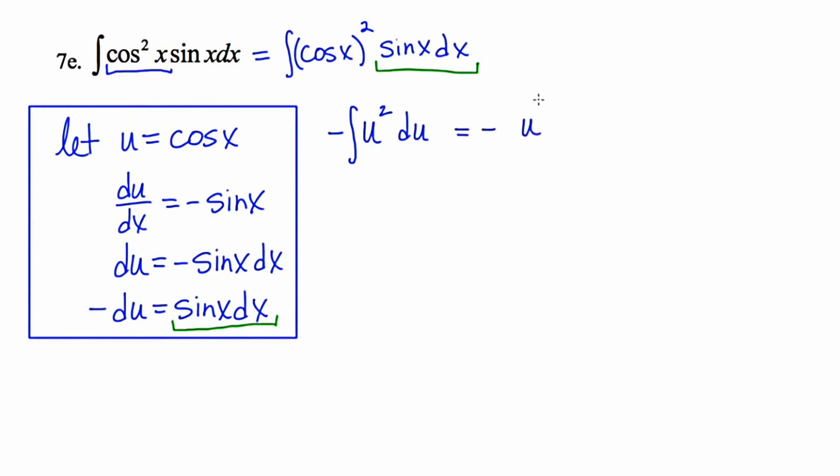So this is going to be negative, leave some space, raise the power from 2 to 3, reciprocate, add your arbitrary constant, and then back substitute. Negative 1/3 something cubed plus c. And that something in this case is cosine of x.